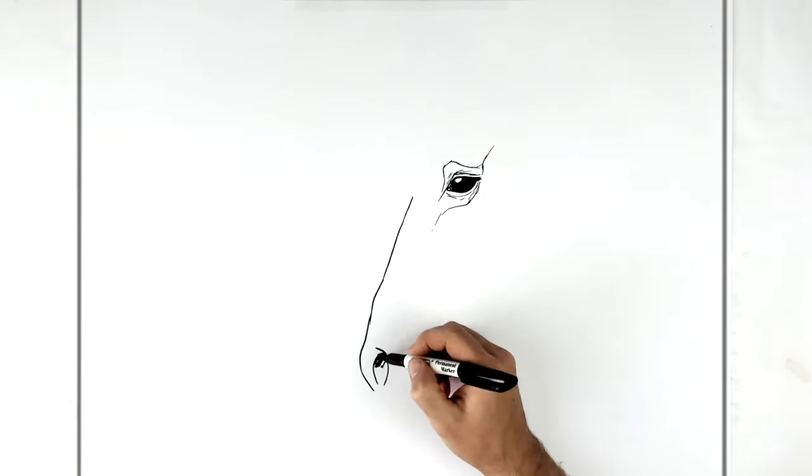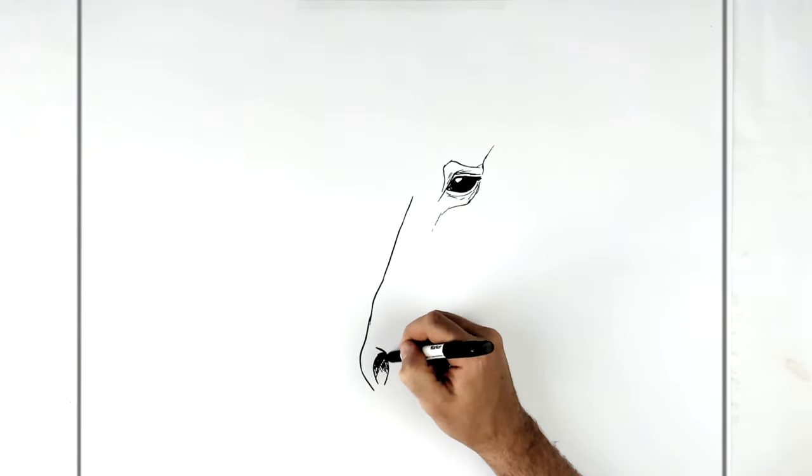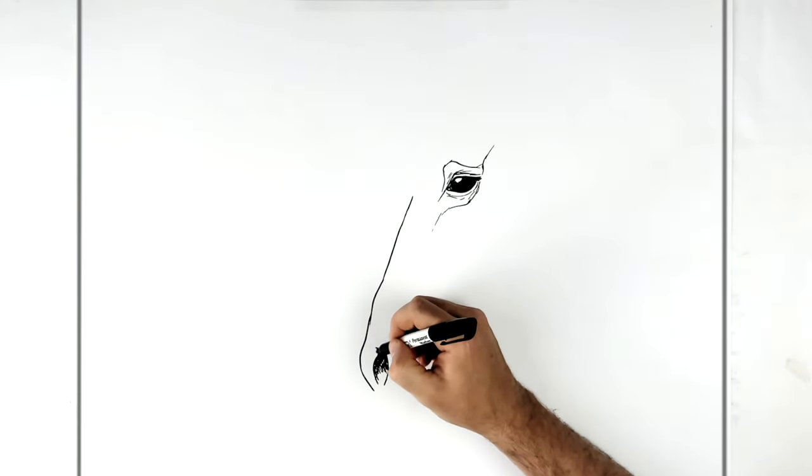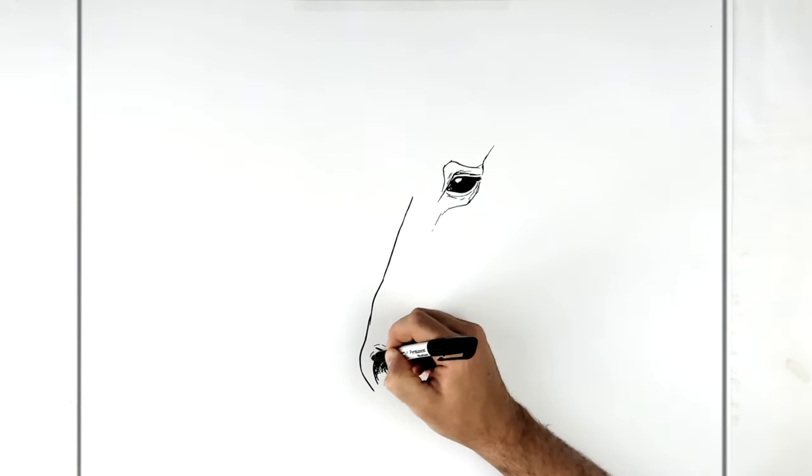Just shade inside here and inside his nostril. It gets lighter as it comes out—it's dark near the top. Just add a little bit of shade like that. Then we've got some nostril lines coming around here.